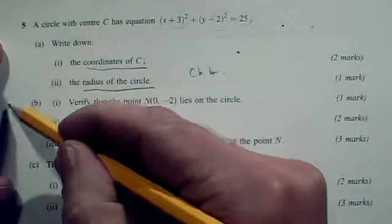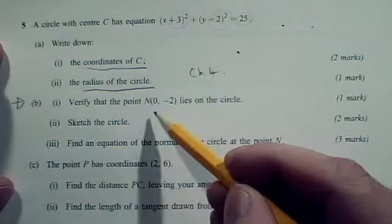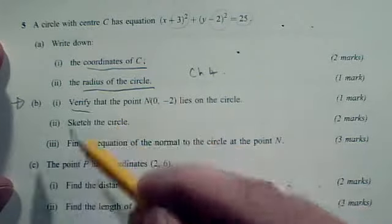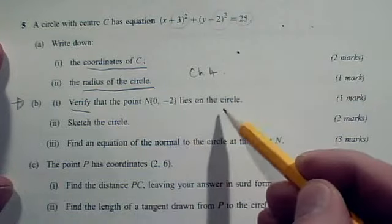Part B, well this looks like a re-entry point at least to begin with. We've got to verify, i.e. just check that this point lies on the circle.